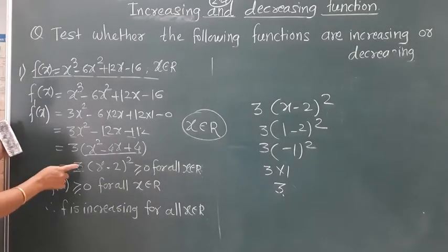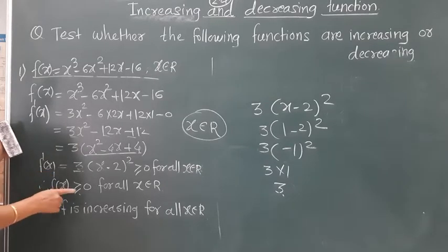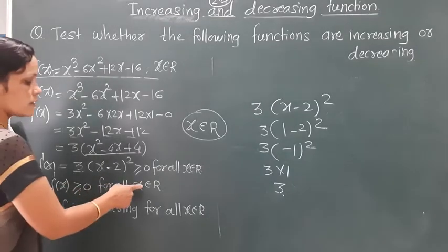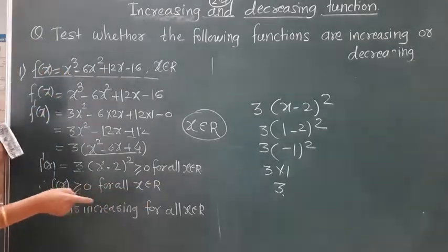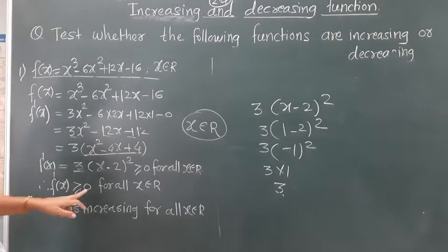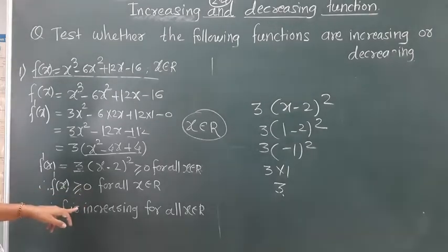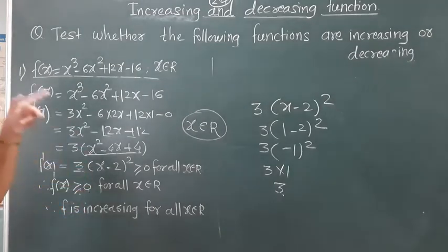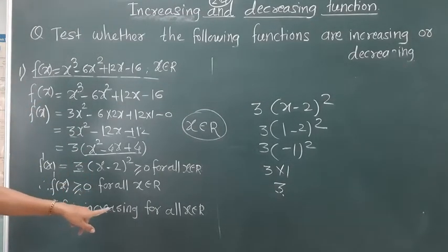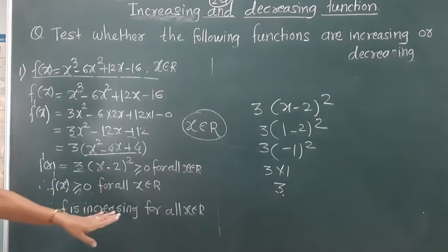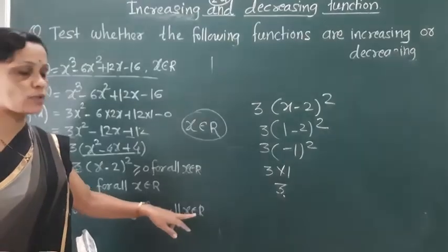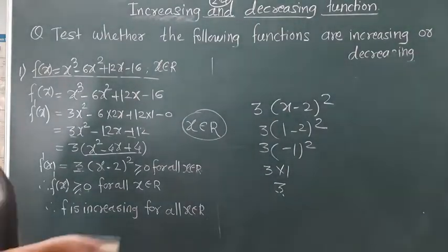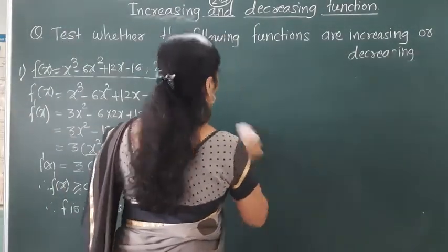Therefore, f'(x) = 3(x - 2)² ≥ 0 for all x belonging to R. Therefore, the function is greater than or equal to 0 for all x in R, which means the function is increasing.